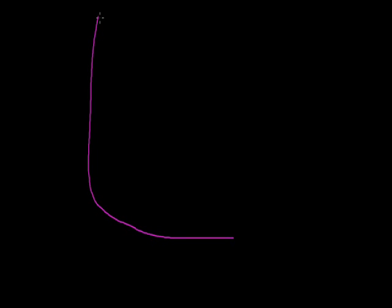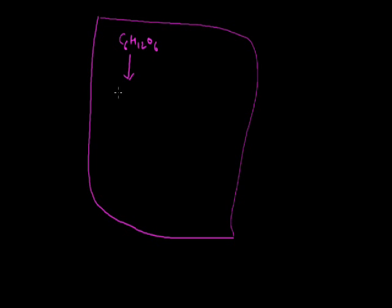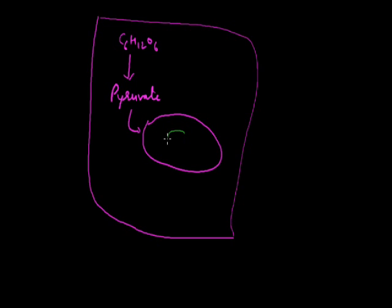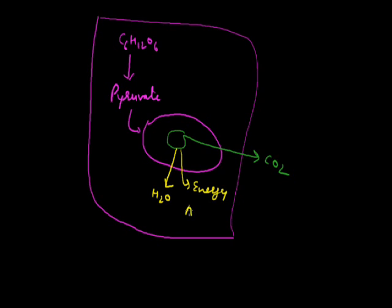In this process, the glucose molecule C6H12O6 becomes oxidized in aerobic or anaerobic conditions. The glucose molecule converts into pyruvate, which then enters the mitochondria. Inside the mitochondria, pyruvic acid converts through a cyclic process into CO2, which is expelled during breathing, and water, which is utilized inside the cell. Energy is produced in the form of ATP and NADPH2 during this cellular respiration, and these ATP molecules are formed inside the mitochondria.